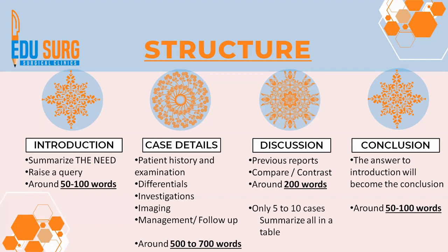The rough word limit for a case report in various journals is around 800 to 1000 words. If you follow this schema, your total will stay within that range. Many students write case reports of 2000 to 3000 words, and it becomes very difficult to cut them down. The concept of minimalism applies to publishing too — less is more. If your case report can be finished in 800 words, you don't need 2000.